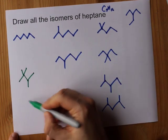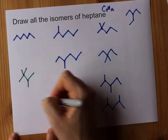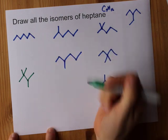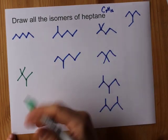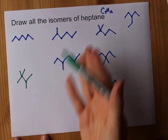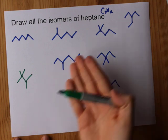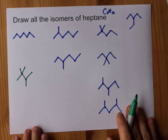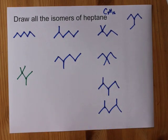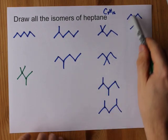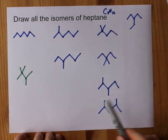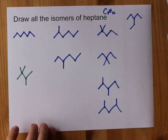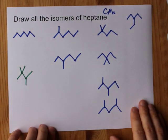If I did propane, I'd run out of space because I'm not allowed to use the end carbons. I didn't even have a propane option for hexane, so don't worry about it. It looks to me like we have 1, 2, 3, 4, 5, 6, 7, 8, and 9 isomers of heptane.